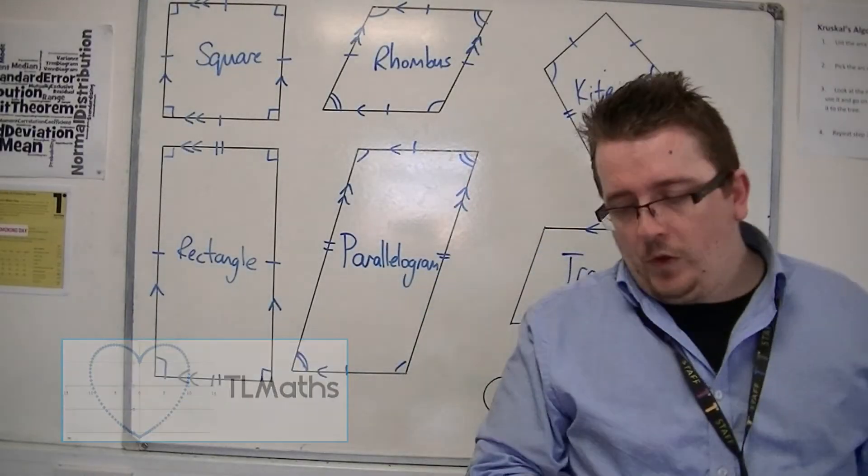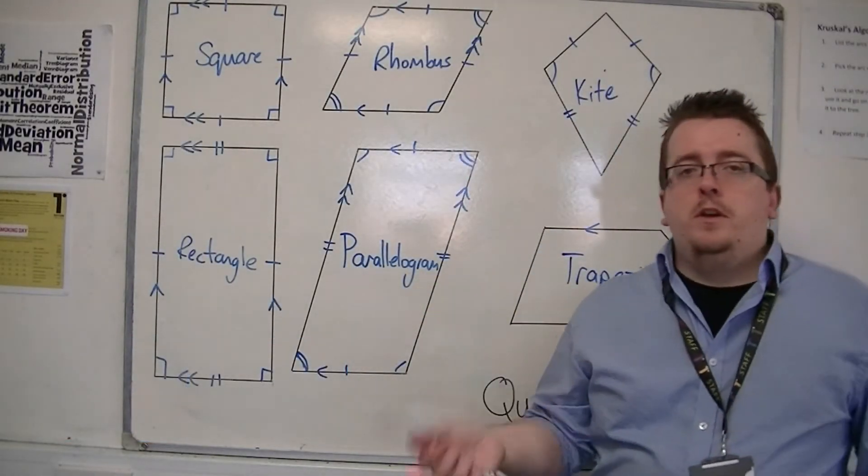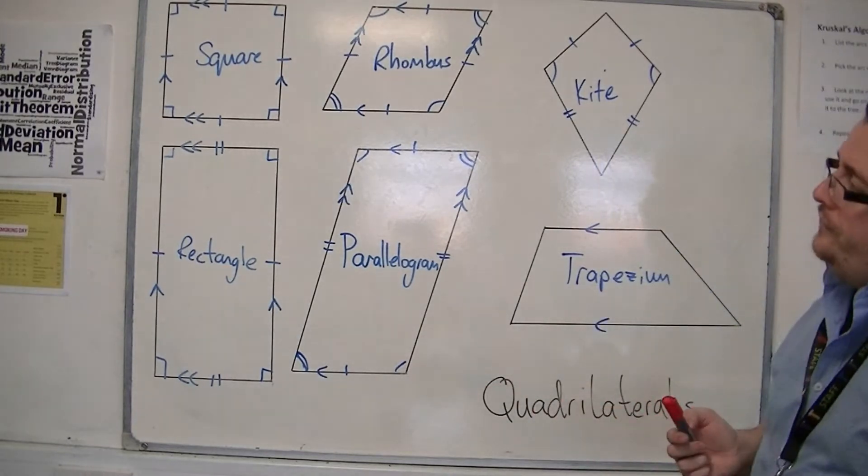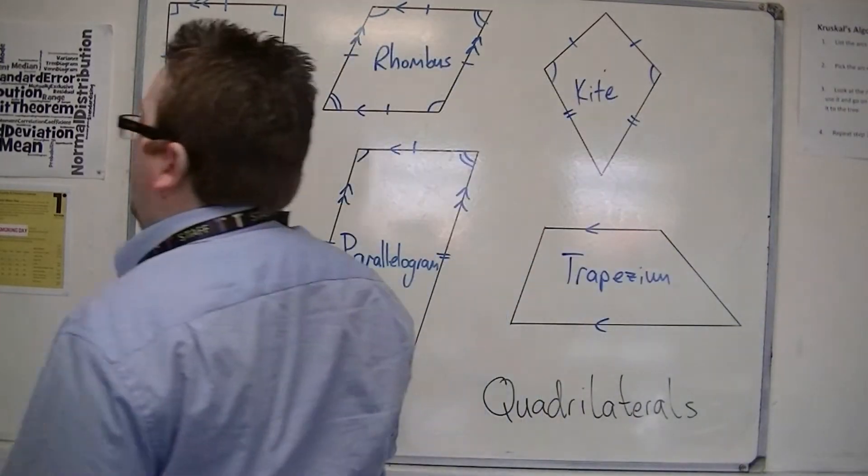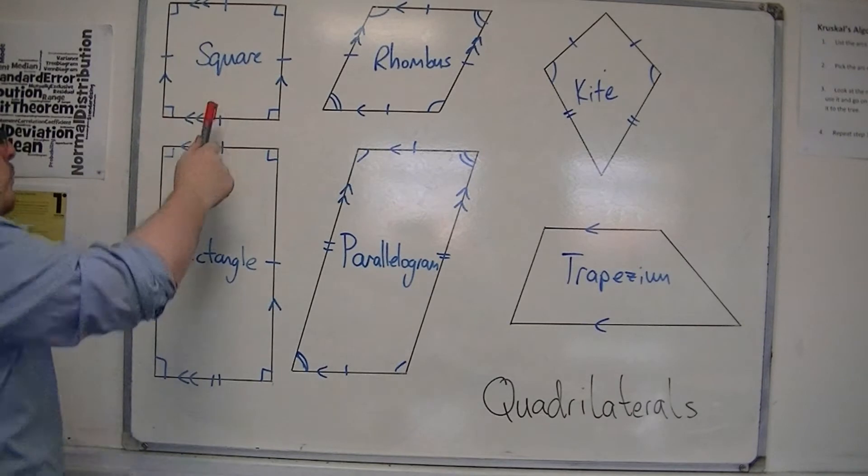OK, in this video we're going to be looking at the area of quadrilaterals. So we have, in very basic terms, a square and a rectangle.